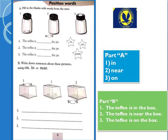Page number four mein baccho hum position words ke baare mein padhenge — ki kaun si cheez kahan hai. Isme hai Part A: fill in the blanks with words from the star. Ab aap dekhen — number one mein agar ek jar hai, usme jo toffee hai woh uske andar padi hui hai. Next mein uske saath mein padi hui hai. Third picture mein uske upar rahi hui hai. Toh fill in the blanks: the toffee is ___ the jar. First picture mein: in the jar. Next: is near — saath mein hai. Third: is on the jar.